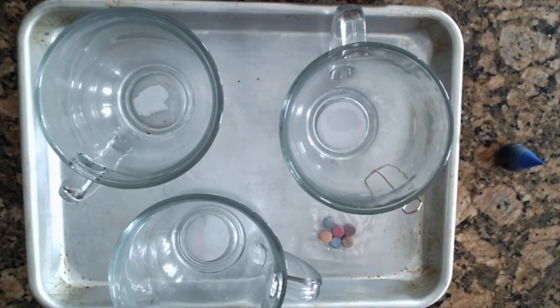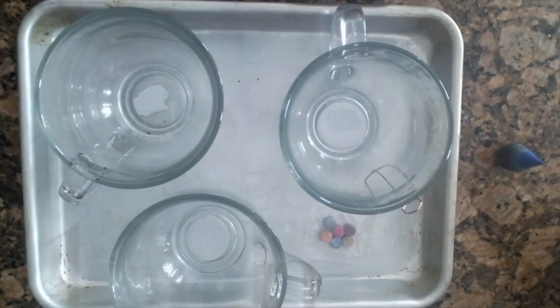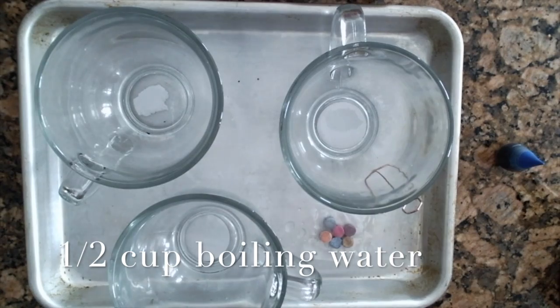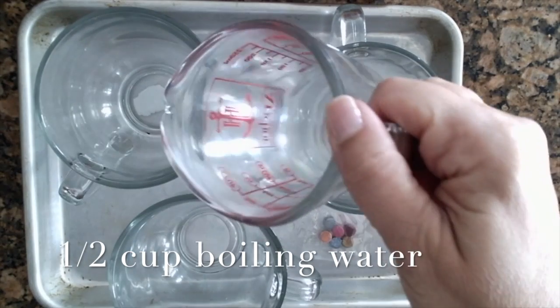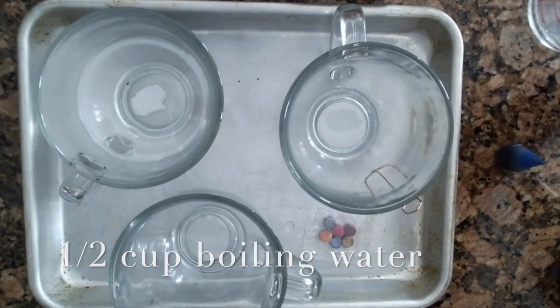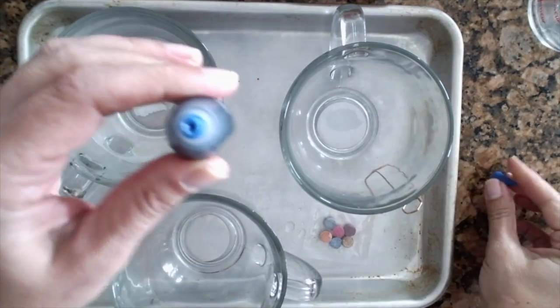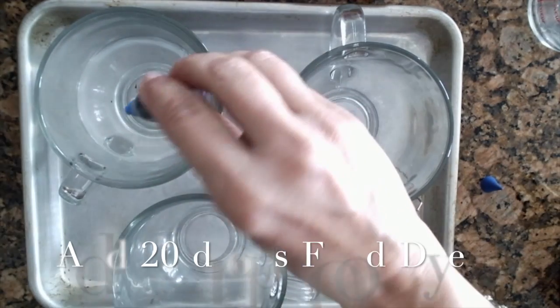I measured out a half cup and I'll pour it in here. It has to be boiling water when you use the food dye. Then I'm going to add my 20 drops.